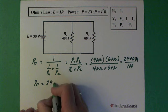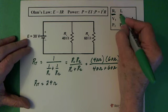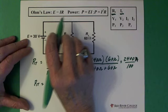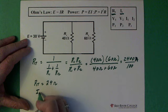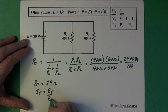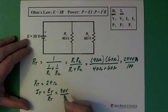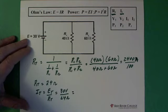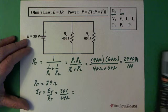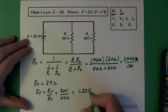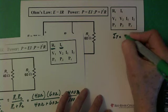Now that we've found our total resistance, we can solve for our total current. And we go to Ohm's Law. You see if we're looking for current here, we can divide both sides here by R. And we end up with I total equals E total over R total. Our total voltage is 30 volts. Total resistance is 24 ohms. We do the division. We have 30 divided by 24 equals 1.25 amps. So there's our total current.